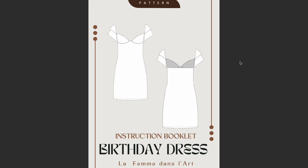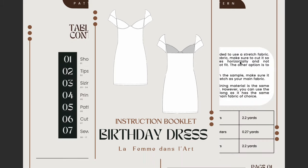Some instructions are not going to be very clear, so sometimes you just have to figure things out on your own. That's why I try to make mine very beginner friendly. I have a table of contents with: a shopping list, tips to help you sew, sizing instructions, printing instructions, pattern assembly, cutting instructions, and sewing instructions. The shopping list tells you exactly how much fabric you need — main fabric, lace, and lining — so you can just go to your fabric store and buy it all very easily.